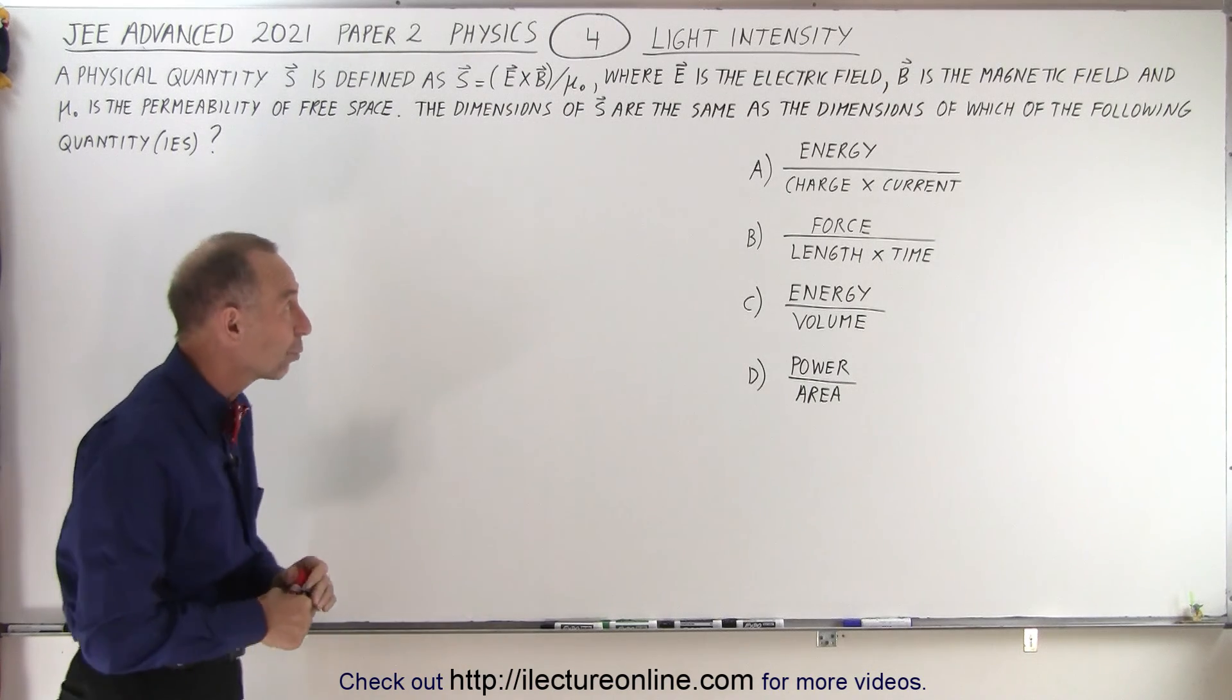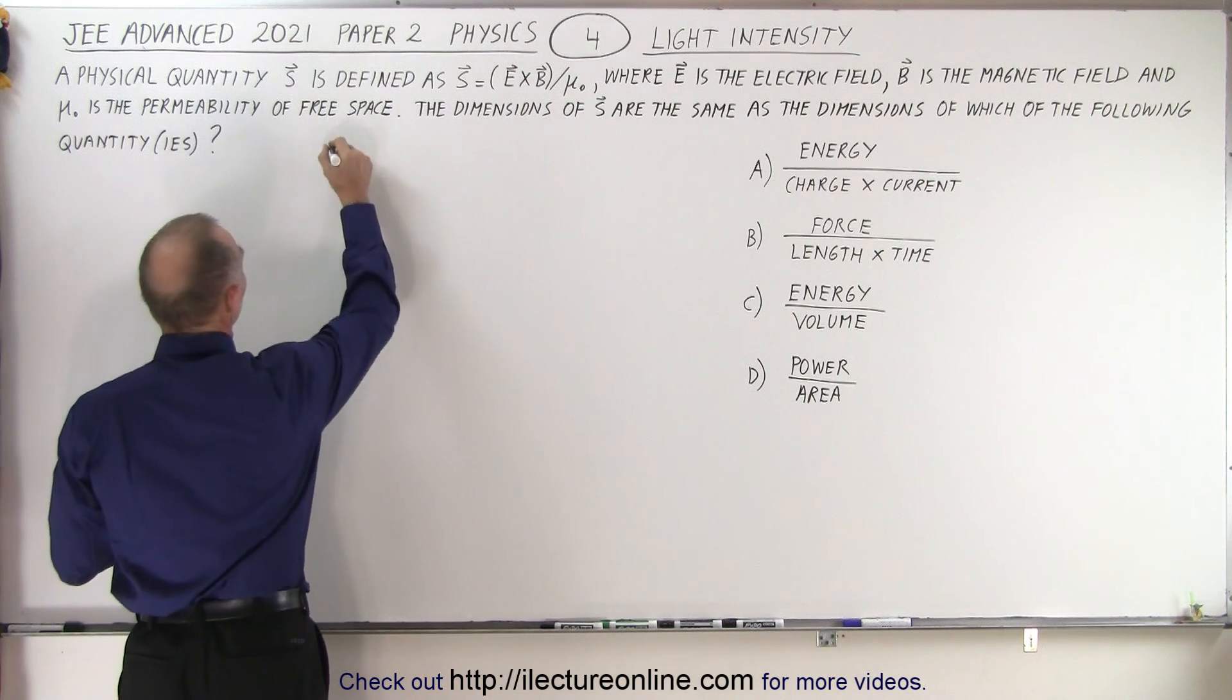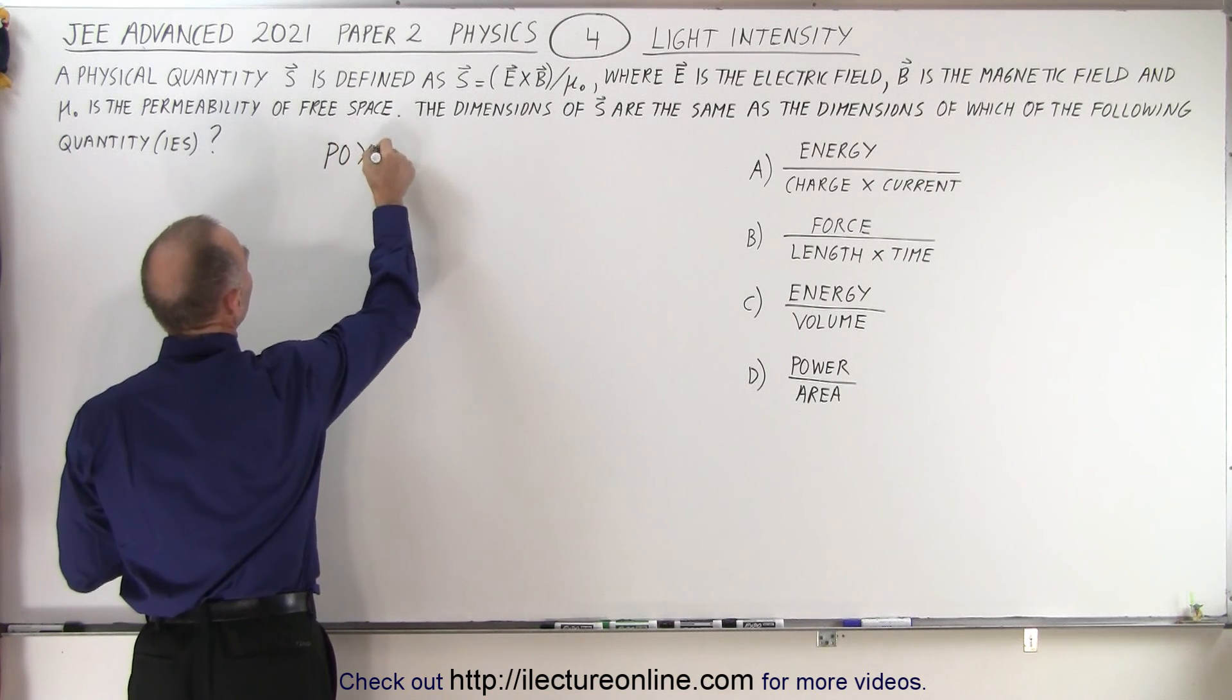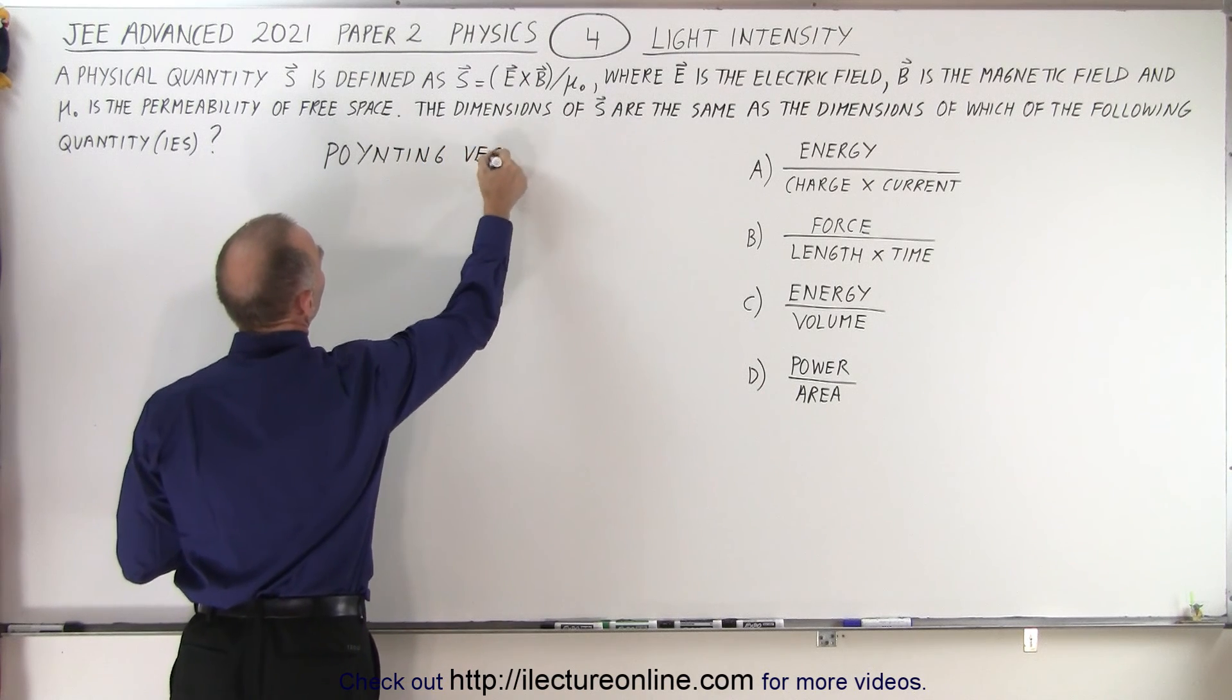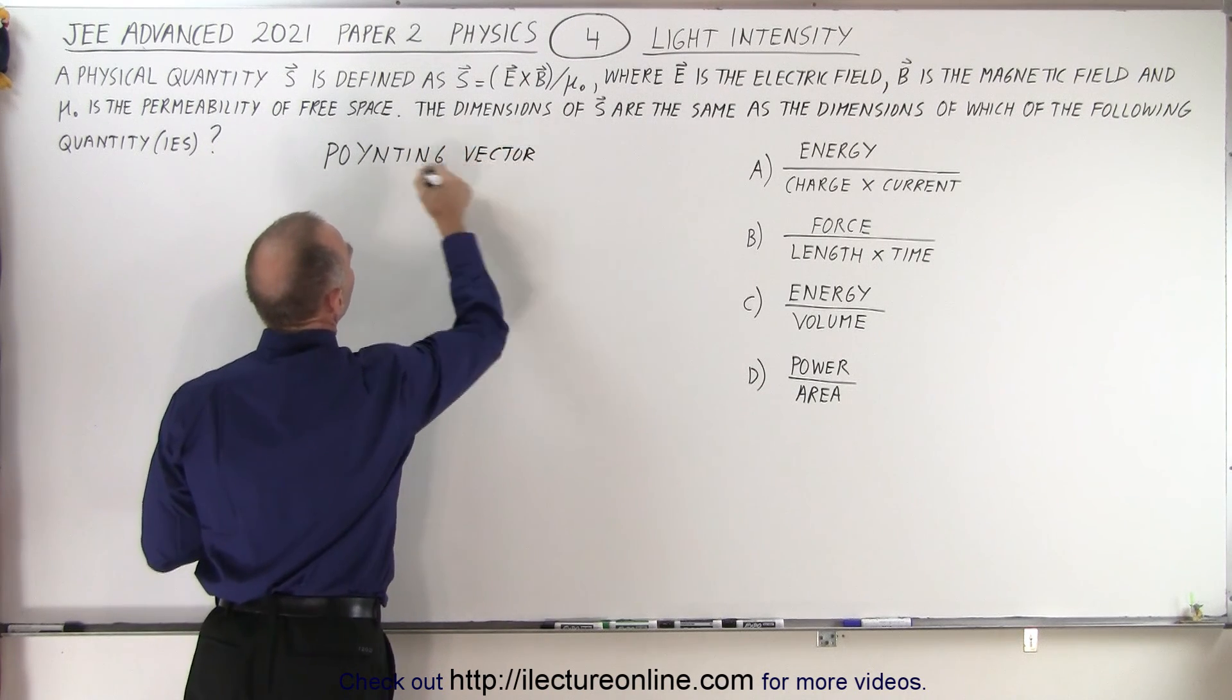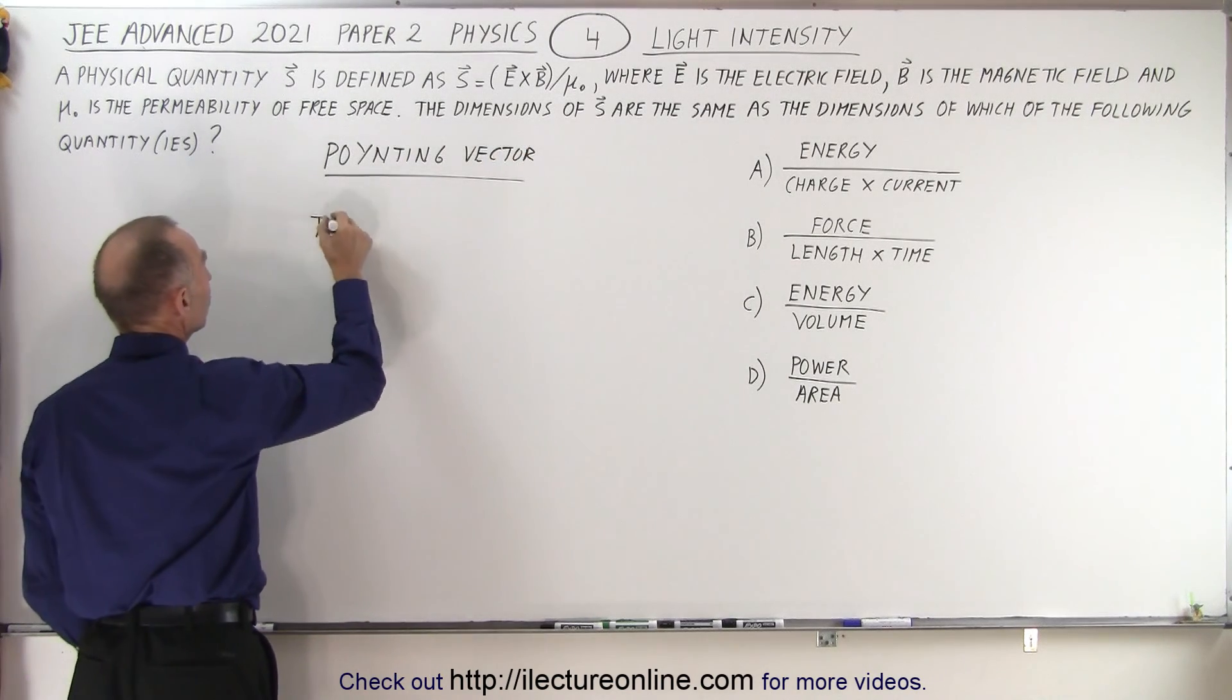Now, you might recognize it as what we call the Poynting vector, written P-O-Y-N-T-I-N-G. This is known as the Poynting vector, and essentially, it is equal to the intensity of light. And the intensity, by definition, is equal to power divided by area.